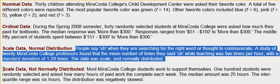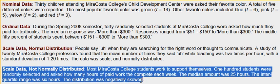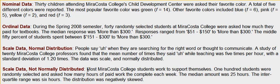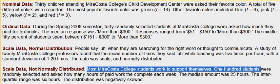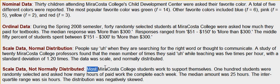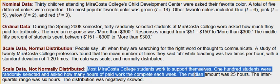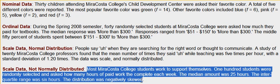And finally, if you have scale data that's not normally distributed — for example, if it's skewed — you provide the median and the IQR. Most MiraCosta College students work to support themselves. 100 students were randomly selected and asked how many hours of paid work they complete each week. The median was 25, the interquartile range was six, and the distribution was negatively skewed.